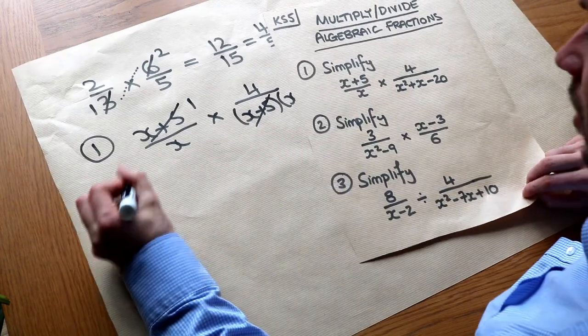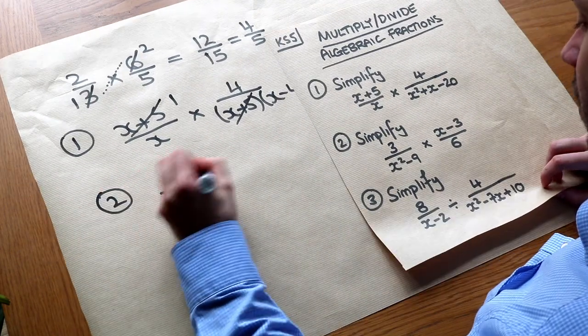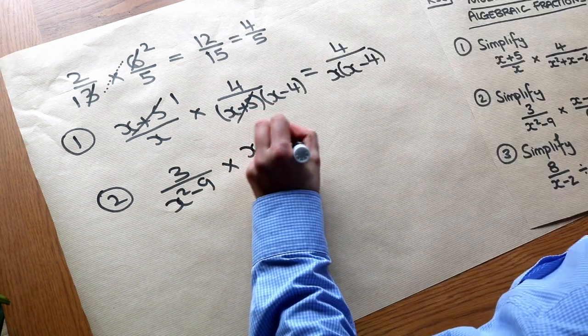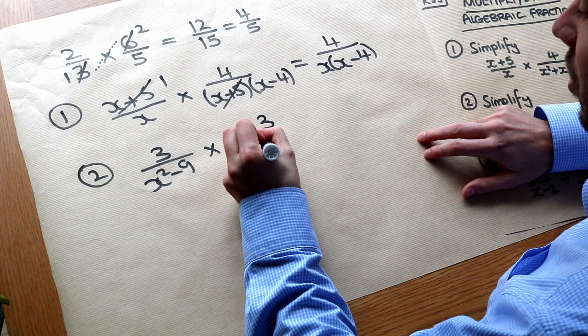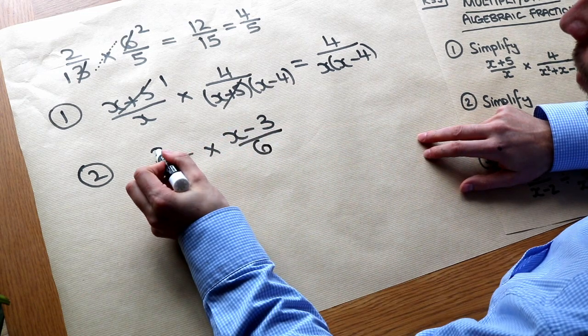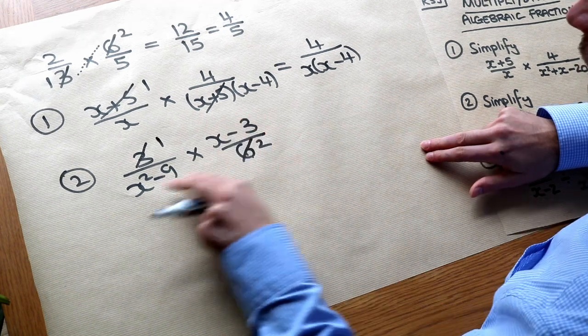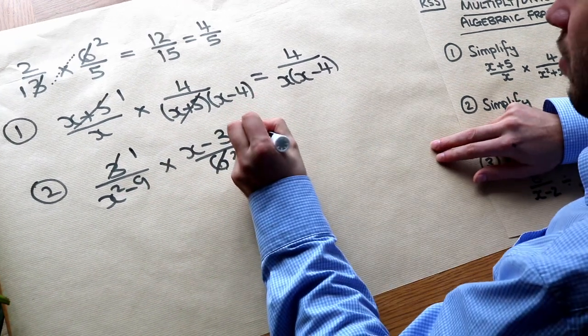What about this second one? We want to do 3 over x squared minus 9 times by x minus 3 over 6. Again we can do some cross-cancelling. So the 3 and the 6 we can divide them both by 3 to get 1 and 2. And then this I need to factorize it first, so I should have written that out first.